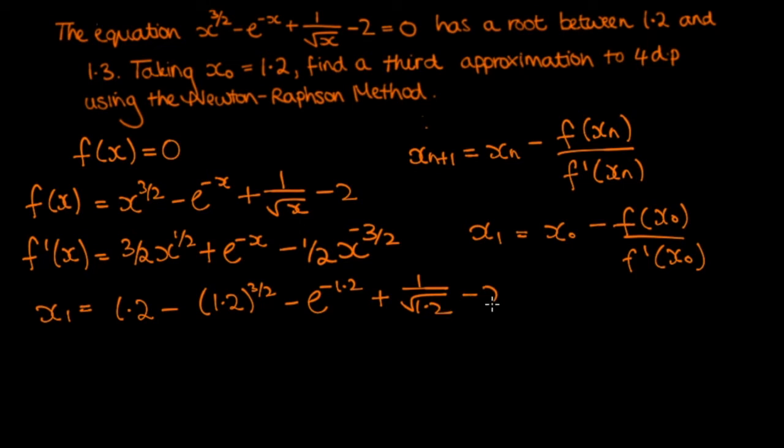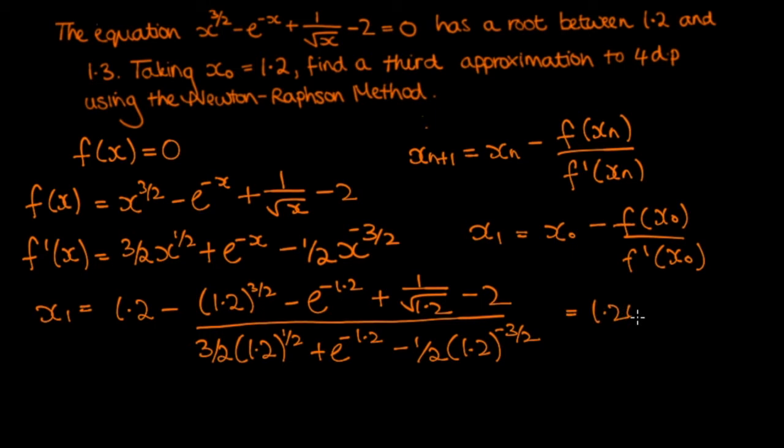And all of that is divided by f prime of 1.2. So we're now plugging 1.2 into f prime of x. So 3 over 2 times 1.2 to the half plus e to the minus 1.2 minus the half times 1.2 to the minus 3 over 2. And if you plug that in your calculator, that should give you a value for x1 being 1.24718 and so on.